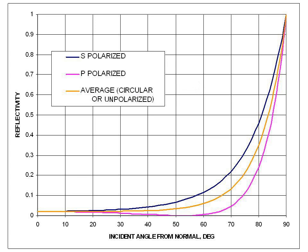Albedo is the measure of the diffuse reflection of solar radiation out of the total solar radiation received by an astronomical body. It is dimensionless and measured on a scale from zero, corresponding to a black body that absorbs all incident radiation, to one, corresponding to a body that reflects all incident radiation.